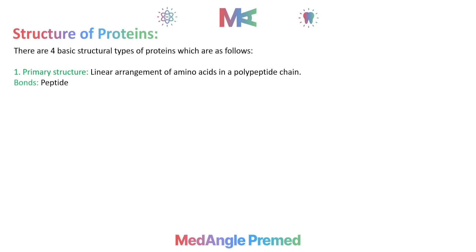In primary structure, peptide bonds have been formed. An example of primary structure is the insulin hormone.